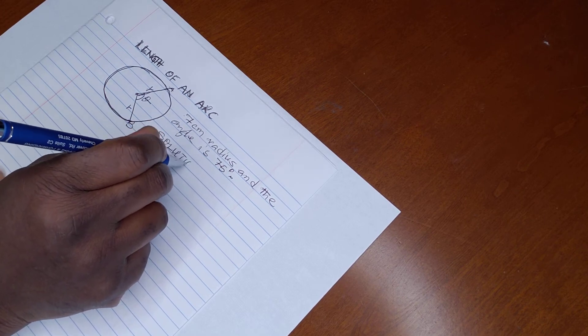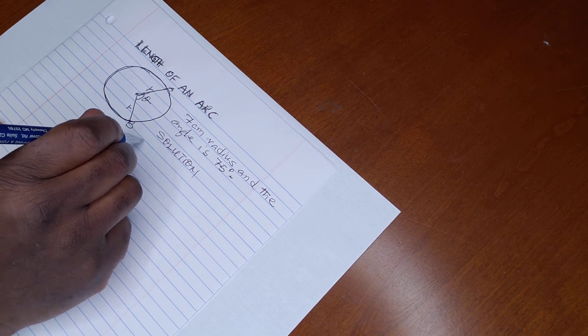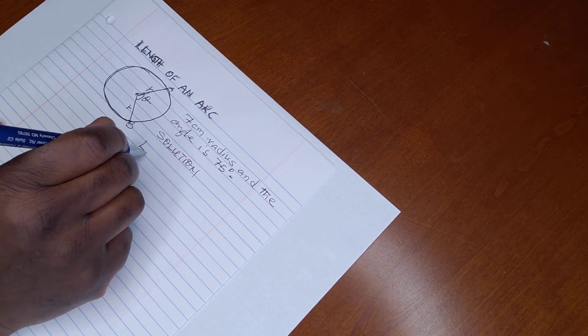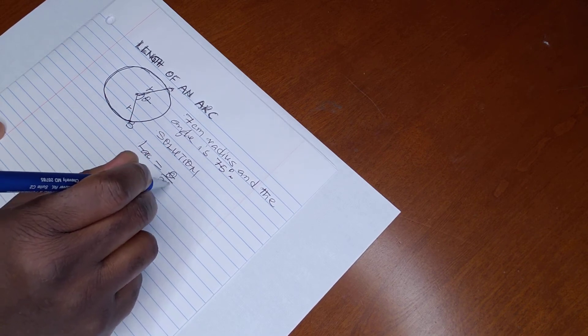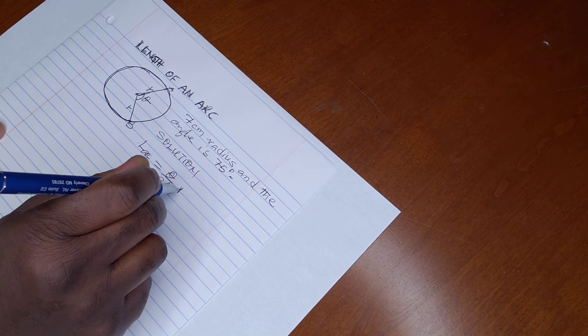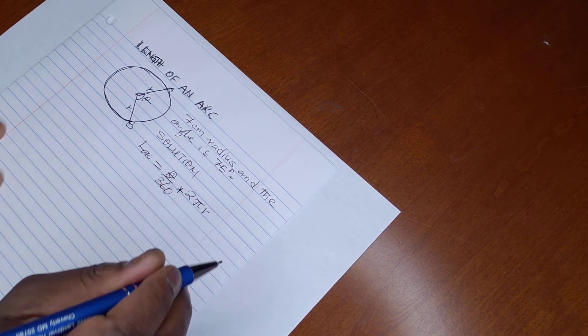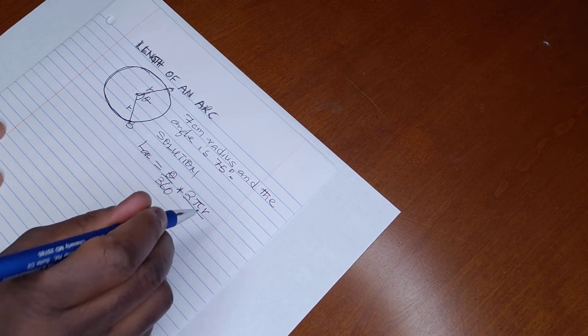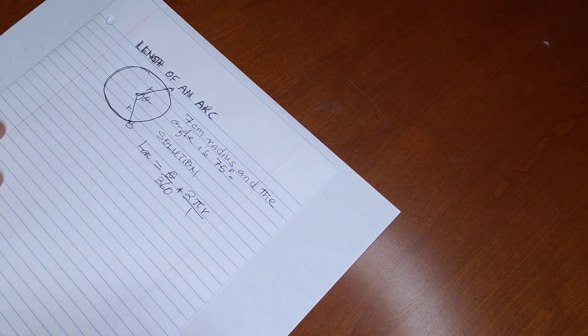The formula is: length of arc, or arc length, is given by theta over 360 multiplied by 2πr. Note that 2πr is the circumference of a circle.